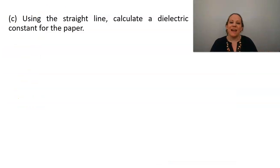Part C. Using the straight line, calculate a dielectric constant for the paper. Okay. So we are going to need remember that equation. Slope equals kappa epsilon naught A over D. So looks like the slope of our graph should be equal to kappa epsilon naught times the area. So yeah, let's get the slope of the graph.